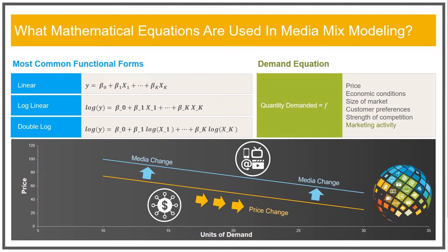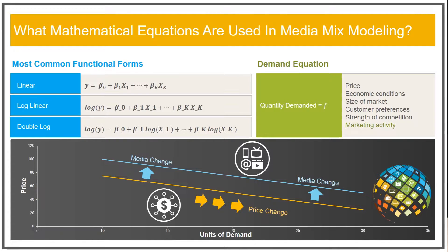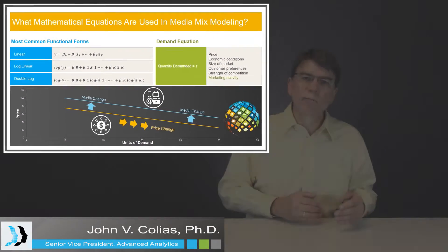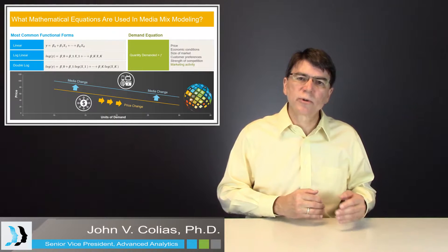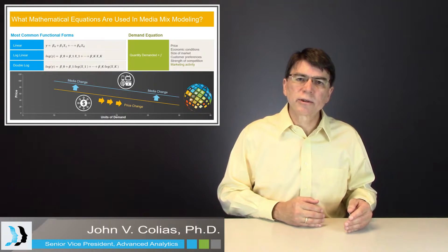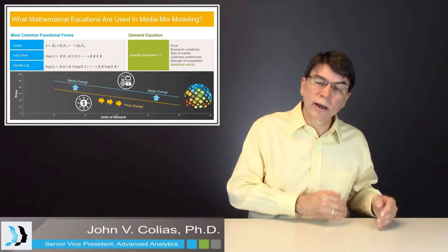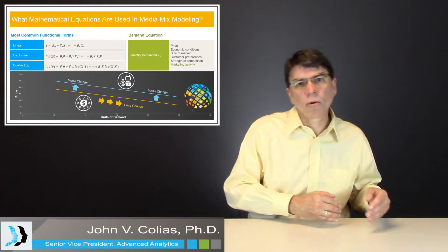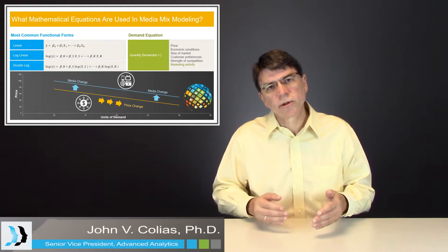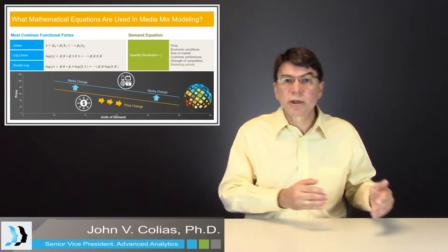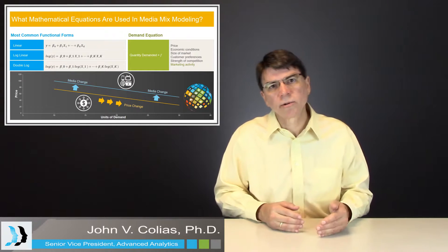Each one of these three equations can be used, but they each have different assumptions embedded within them about how media activity impacts sales. With the linear equation, if you have an increase of 10% of media activity, the percentage impact on sales is different depending upon whether you're starting at 100 GRPs or starting at 200 GRPs. The impact would be greater for a 10% increase in media activity in terms of percentage increase on sales when you're at 100 than when you're at 200 GRPs.